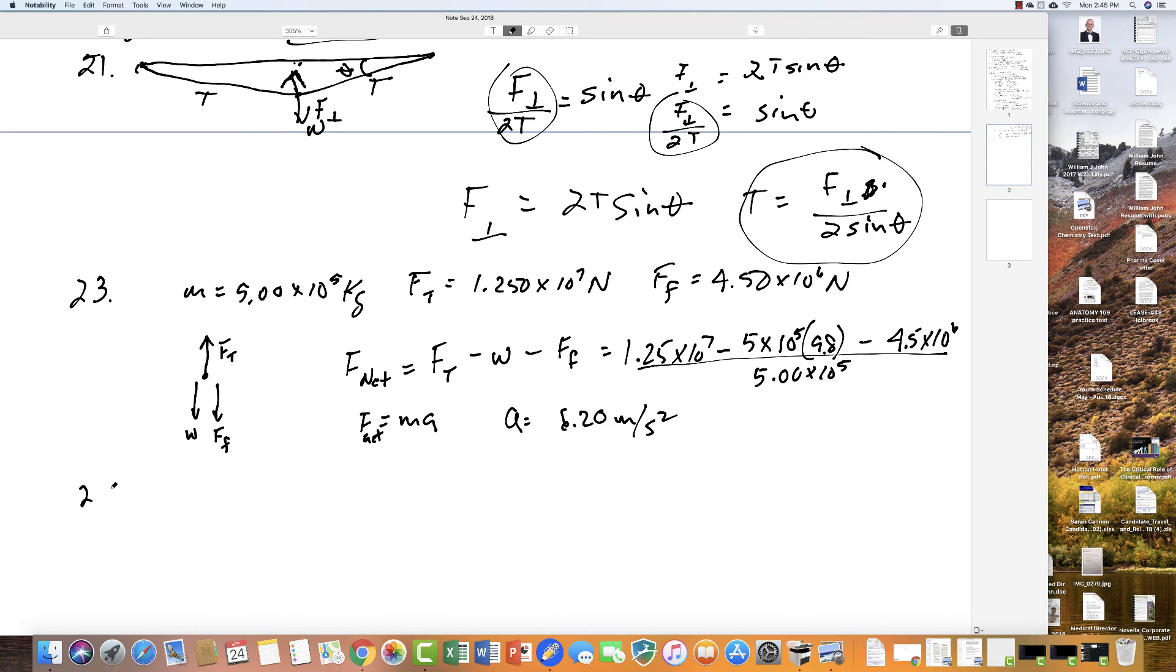Number 24 states, the wheels of a mid-sized car exert a force of 2,100 newtons backwards on the road to accelerate the car forward in the forward direction. So the force, we'll call it total or thrust again, just to use the same kind of terminology, is 2,100 newtons. If the force of friction, including air resistance, is 250 newtons and the acceleration of the car is 1.80 meters per second squared, what is the mass of the car plus its occupants?